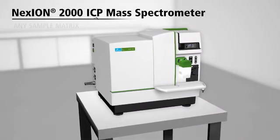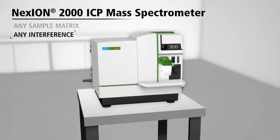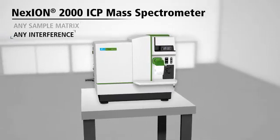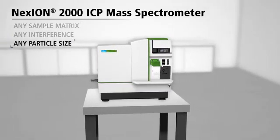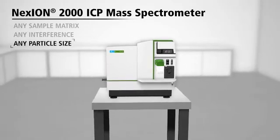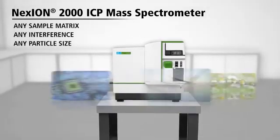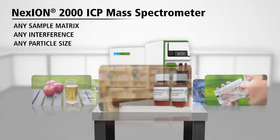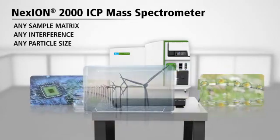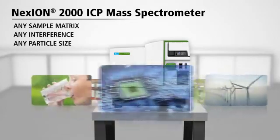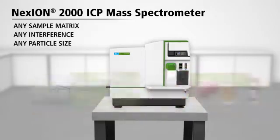Nexion 2000 ICP-MS empowers your lab with endless choices and possibilities, with powerful and flexible interference removal techniques, better detection limits, and maximum uptime, streamlining your analysis workflow with an all-matrix, all-sample, all-inclusive system. The new Nexion 2000 ICP-MS for effortless versatility.